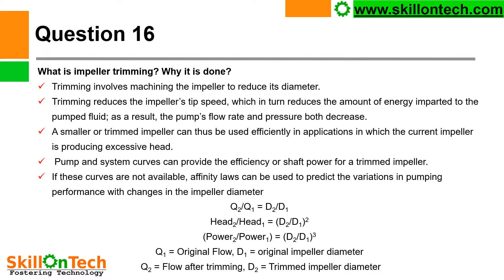What is impeller trimming and why is it done? Trimming involves machining the impeller to reduce its diameter. Trimming reduces the impeller tip velocity, which in turn reduces the amount of energy imparted to the pump fluid. As a result, both the pump flow rate and pressure decrease. A trimmed impeller can be used efficiently in applications where the current impeller is producing excessive head. Affinity laws can be used to predict the variation in pumping performance with changes in impeller diameter.